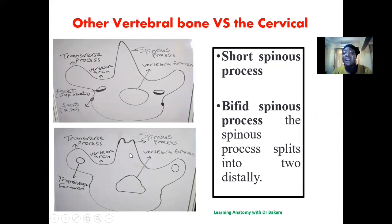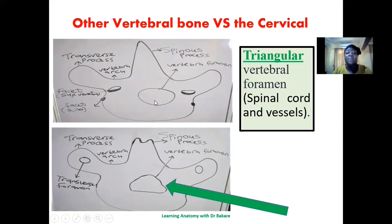The cervical vertebra has a very short spinous process, and they are also bifid, which means they tend to split into two — they are not pointed like in the other vertebral bones. Then we have a triangular vertebral foramen. The central vertebral foramen that allows passage of the spinal cord and spinal vessels is circular in other vertebrae, but in the cervical vertebra it is triangular.